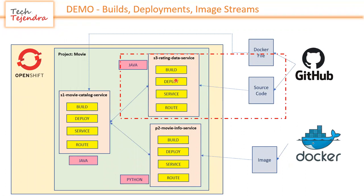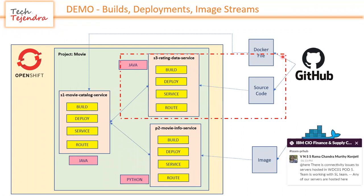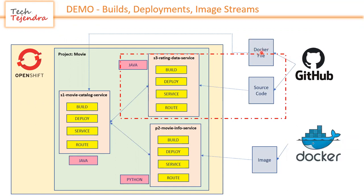We have completed this part. In the next video I will show you how to deploy an application from a Dockerfile. Then once that application is deployed, I will show you how S1 makes connections internally - not from the external route - and we will complete this example. Thanks for listening.